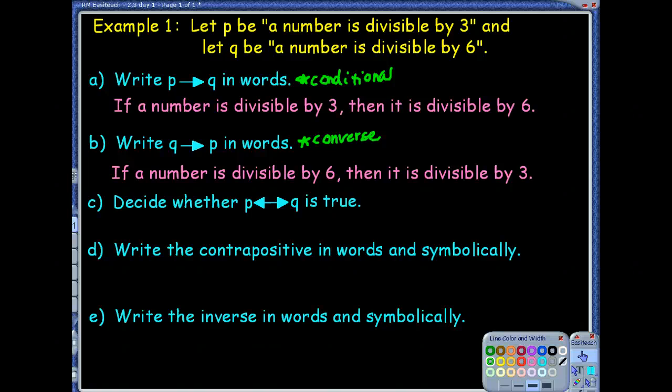Alright, part C. It says, decide whether P, now this is the if and only if symbol, right? Okay. So that's a biconditional. Q, so this is your biconditional, is true. Okay, so if that's true, that means that the conditional and the converse had to both be true.